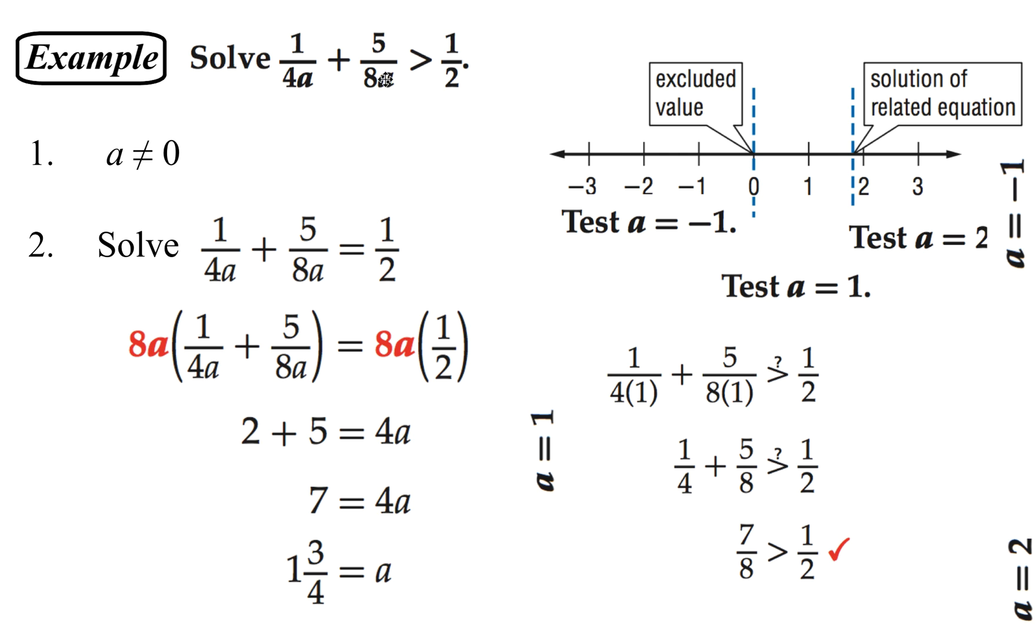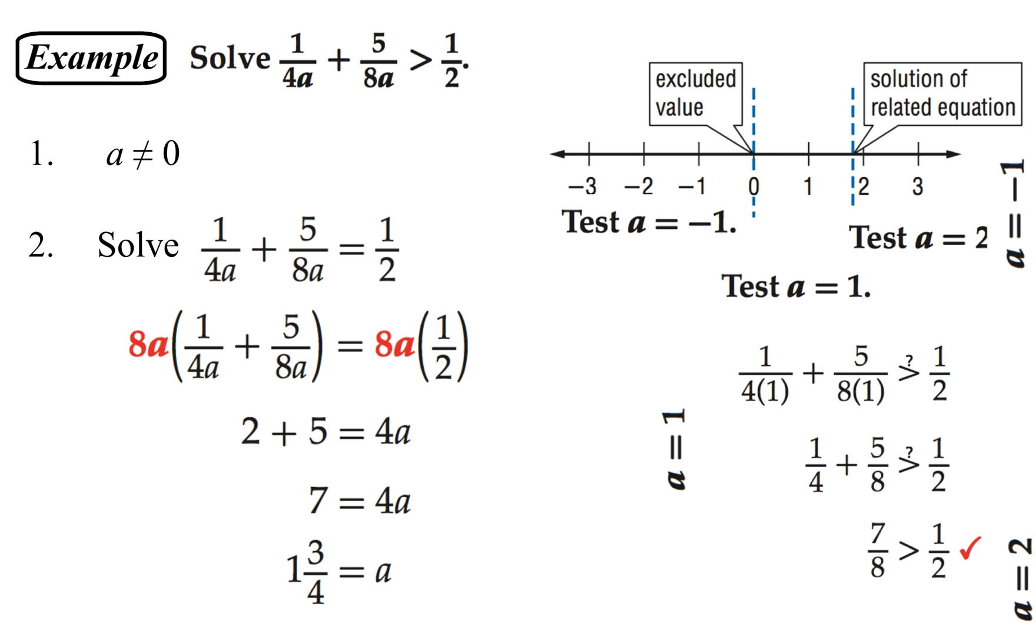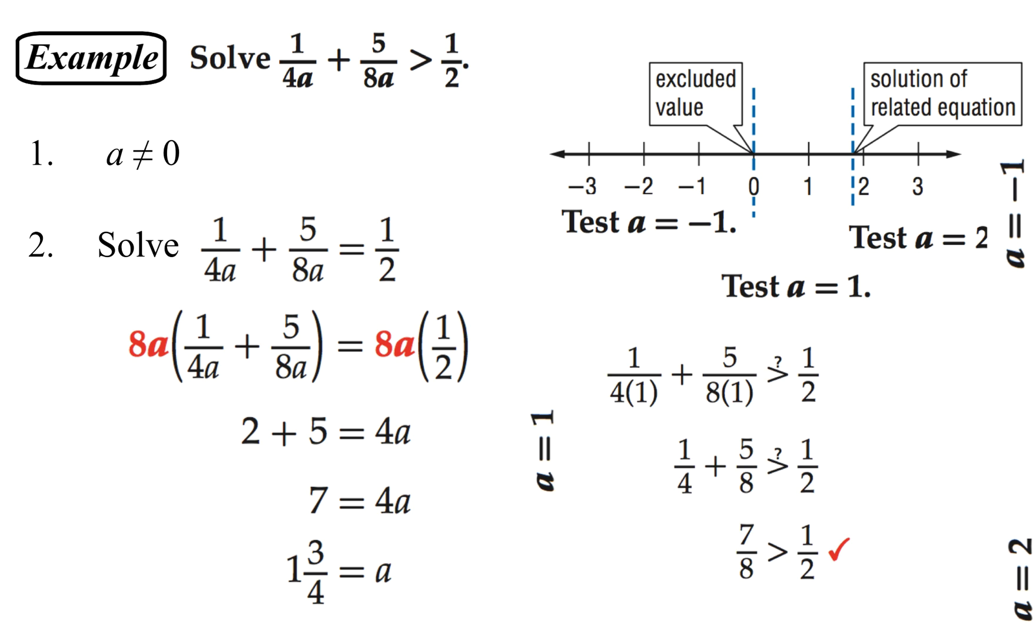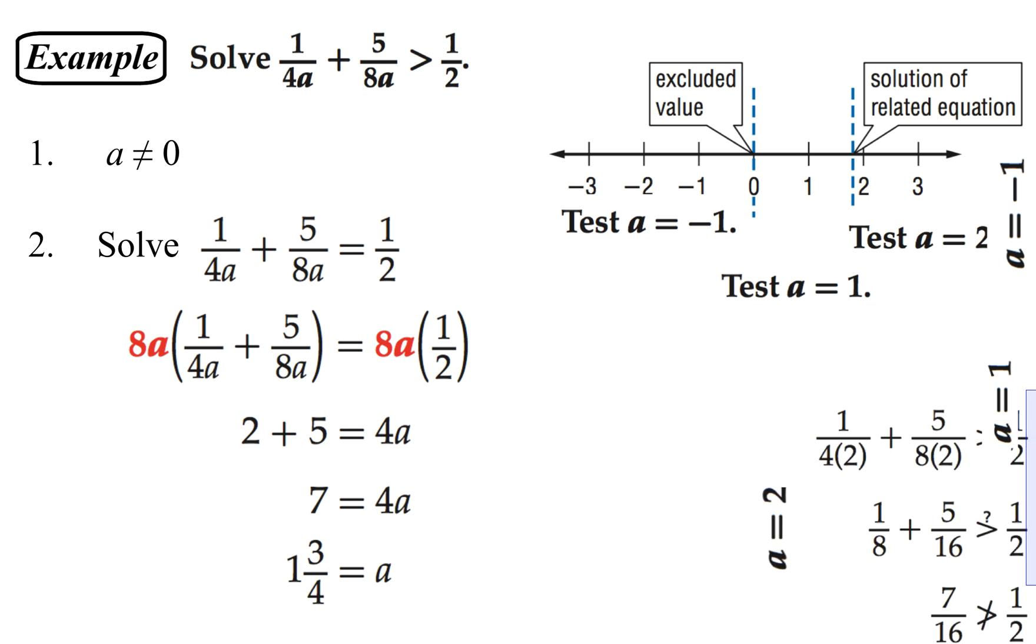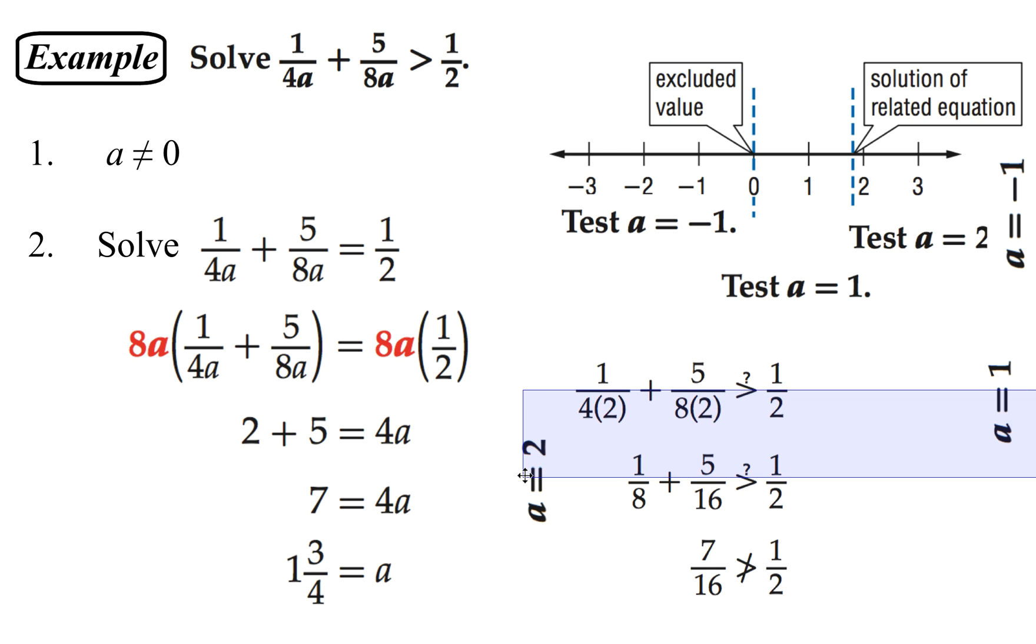Remember, 0 cannot be a solution. That's eliminated. So that's going to be an open dot here. But everything up to this point works. And then we're going to go ahead and check our value for A equals 2. And so A equals 2 gives us 7 sixteenths being greater than 1 half. And that is not a true statement. So that value does not work. So then our solution set will be all of the values greater than 0, but less than or equal to 1 and 3 fourths.